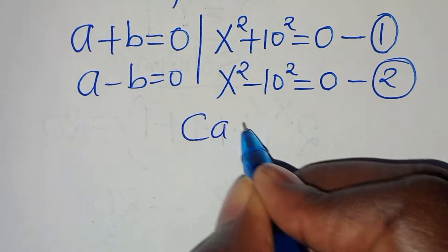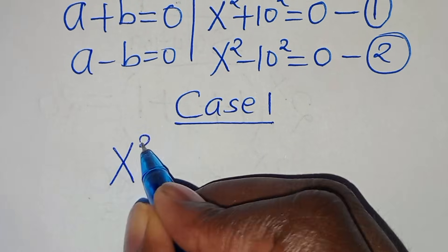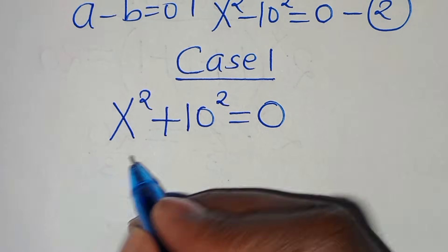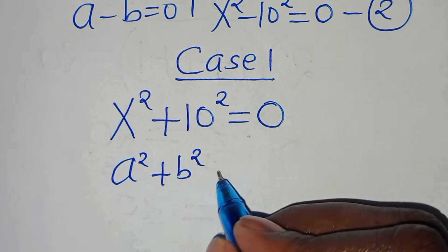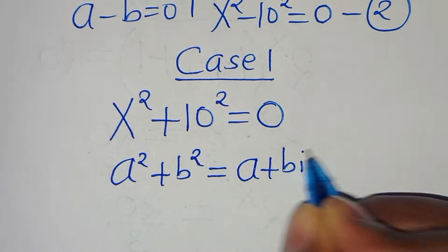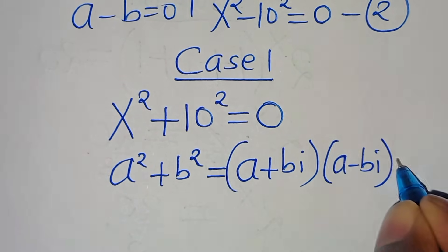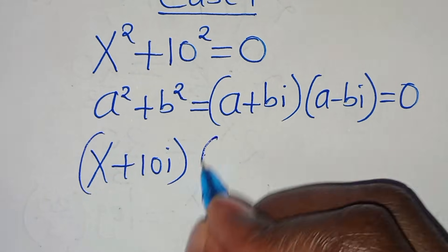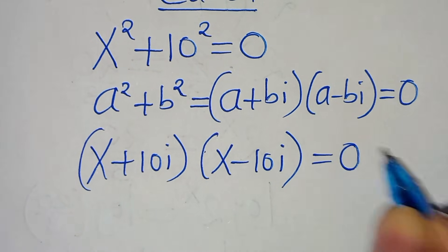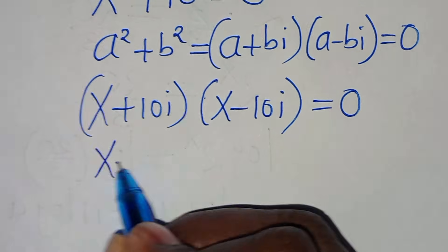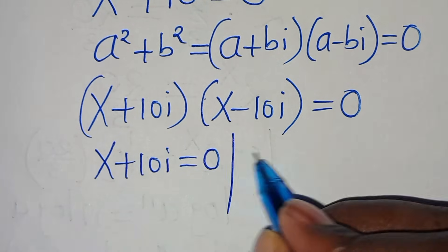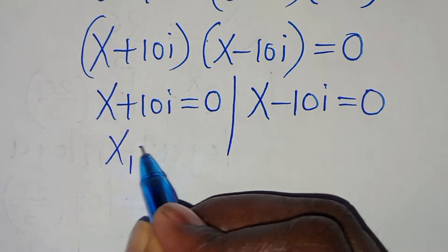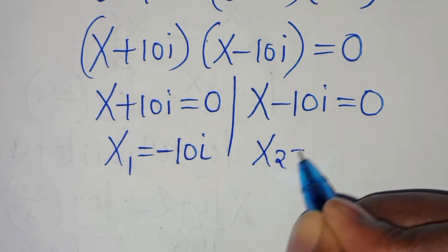Let's start with case 1, which is x to the power of 2 plus 10 to the power of 2, this is equal to 0. This equation is of the form a squared plus b squared, which we can express as a plus bi multiplied by a minus bi, equal to 0. So we have x plus 10i multiplied by x minus 10i equals 0. Therefore x plus 10i equals 0 and x minus 10i equals 0, giving us x₁ equals minus 10i and x₂ equals 10i.